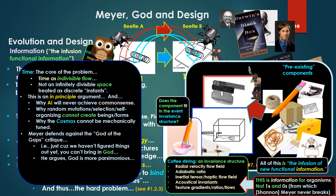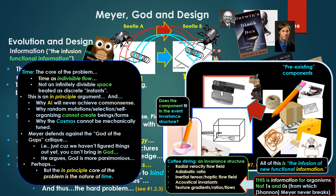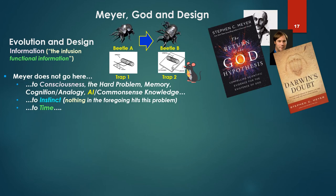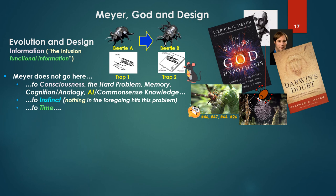So time is at the core of the problem. Time is indivisible flow, not infinitely divisible space treated as discrete instants. This is an in-principle argument—why AI will never achieve common sense, why random mutations or selection or self-organizing cannot create beings or forms mechanically, where the cosmos cannot be mechanically tuned. Meyer defends his arguments against the god-of-the-gaps critique. That is, just because we haven't figured out things yet, we haven't had time to do it—you just can't bring in God as the explanation. Give us more time. Meyer at this point is arguing, well, God is now more parsimonious than all the stuff you have to bring in to tune your cosmos—the inflationary stuff, the string theory stuff, on and on. Perhaps, but the in-principle core of the problem is the nature of time, which Meyer never looks at.